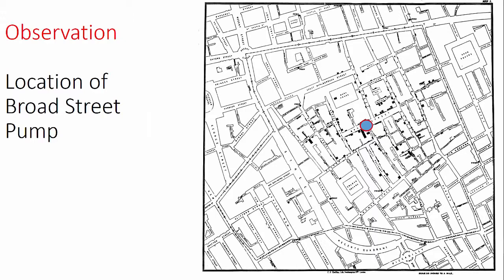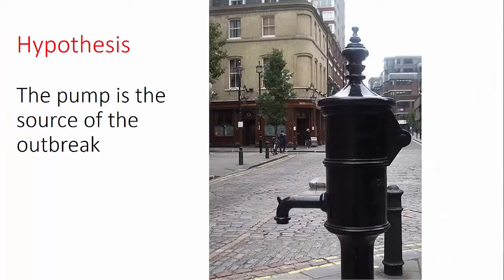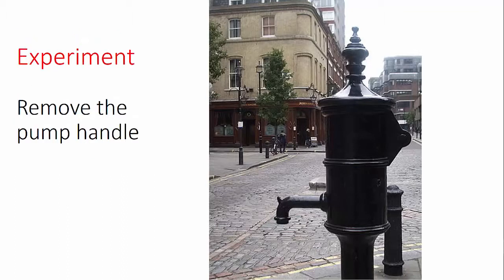Dr. Snow made a map of the outbreak, showing where each home in which someone had contracted cholera was located. He noticed the outbreak clustered around a water pump at the intersection of Broad Street and Cambridge Street, shown here by the blue circle on the map. He also realized that the brewery workers near the pump did not become ill. He discovered that the workers are allotted a certain amount of beer each day and did not drink from the pump. So he proposed an explanation: he thought the pump was the source of the outbreak, not bad air. Dr. Snow persuaded the authorities to simply remove the handle from the pump. This ended the outbreak.